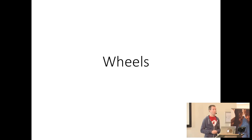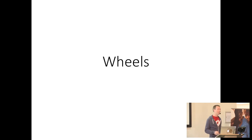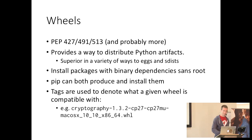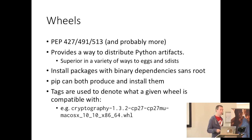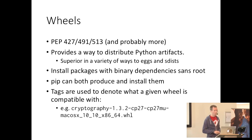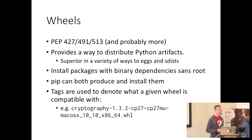Wouldn't it be nice if we could distribute pre-compiled software like the OS package managers do? Then users wouldn't have to know all this just to use some software. Why can't pip install cryptography work as if there's no C magic inside? Well, with wheels, mostly it can — like any purported panacea, there are some caveats we'll talk about later. Wheels are specified in at least three PEPs; they provide a way to distribute Python artifacts and are superior in various ways to eggs and sdist. They allow you to install packages with binary dependencies without root, and pip can both produce and install them.